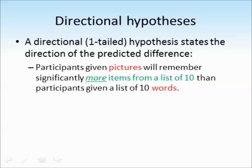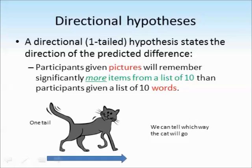To illustrate why it might be called a one-tailed hypothesis, we can use the example of a cat. If we look at a picture of a cat, it has one tail and we know which end is the front and which is the back — when it moves, we can tell which way it's going to walk. So to help you remember a one-tailed hypothesis, think about the cat: we know which direction it's going to go in.